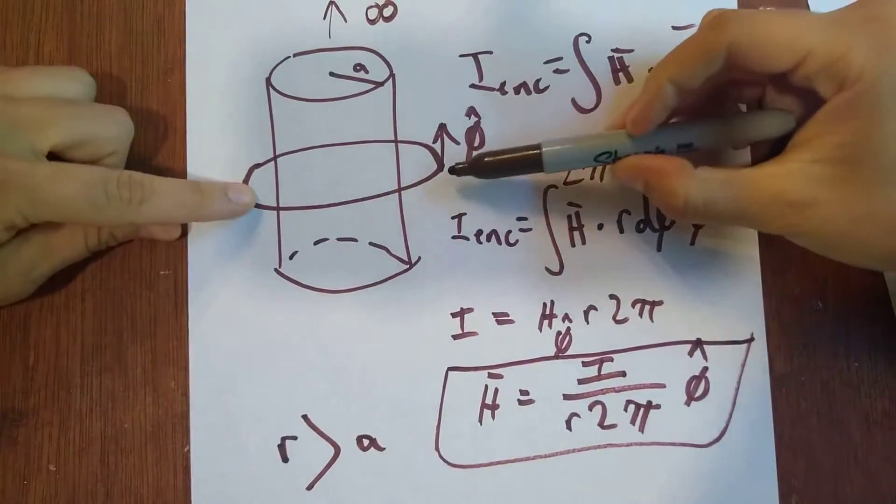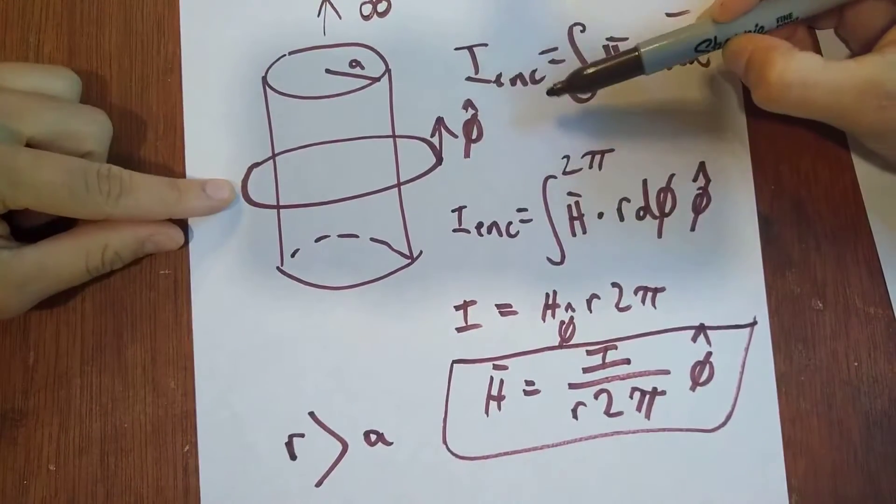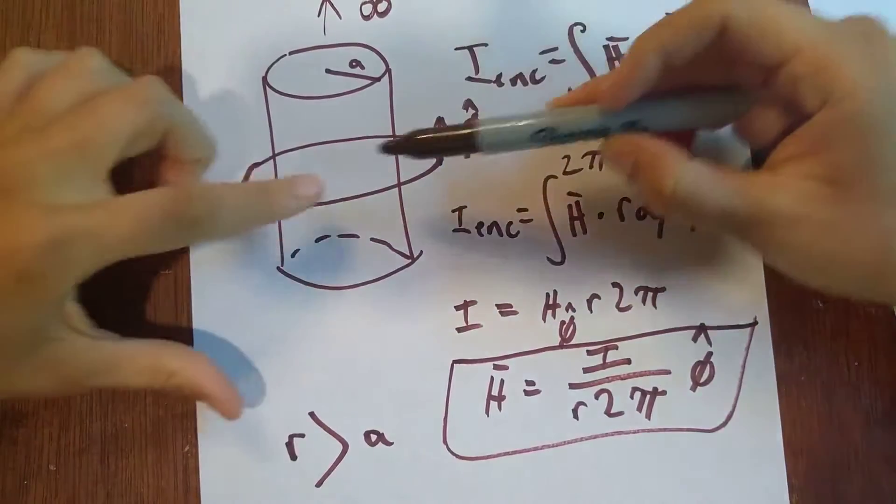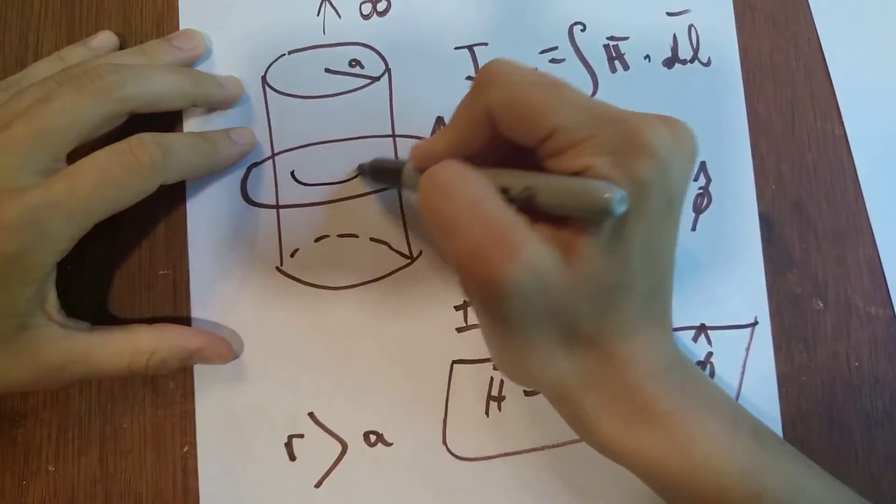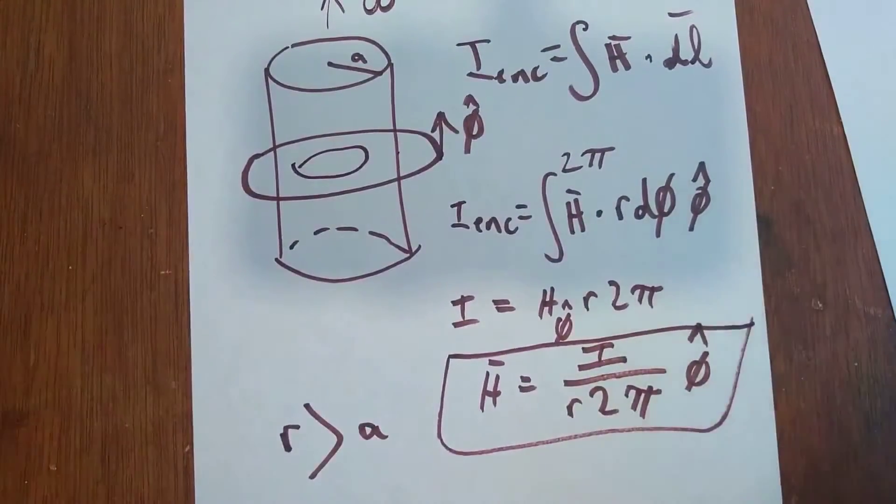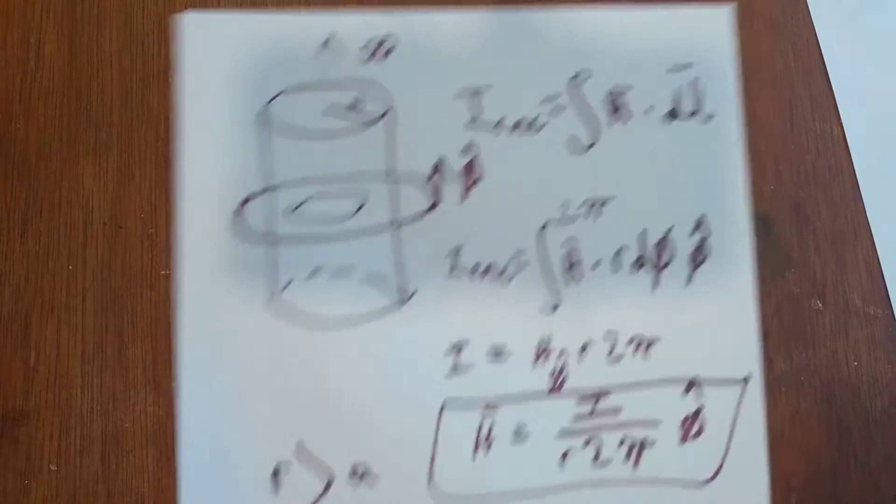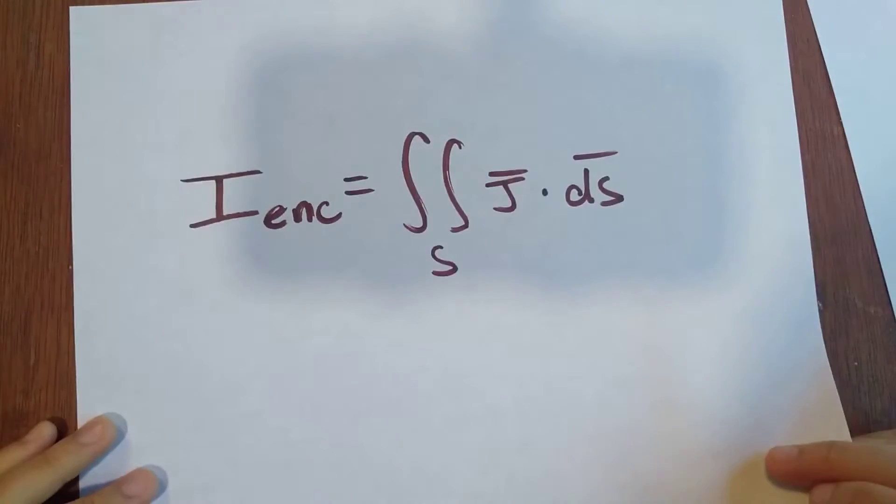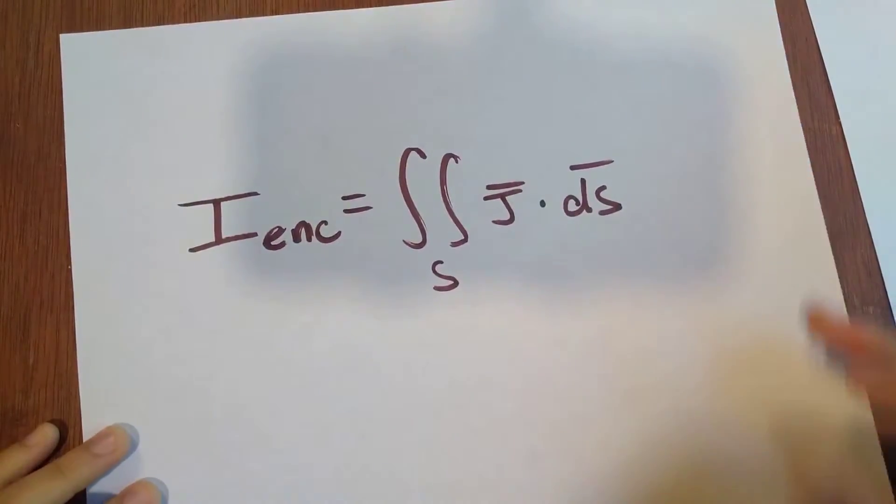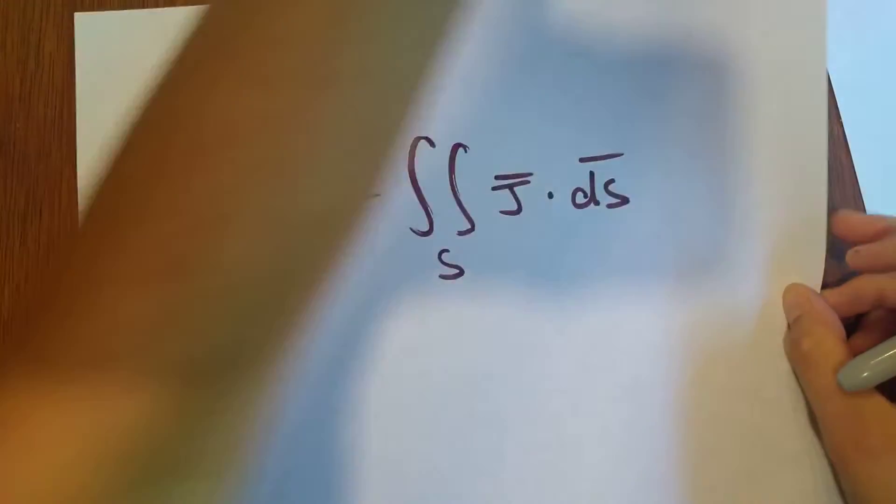Because right now, our Amperian loop is enclosing all of the current. But what if the Amperian loop was maybe right here? How much would that be? Alright, for that, we've got to bring in another equation. This trusty guy right here.